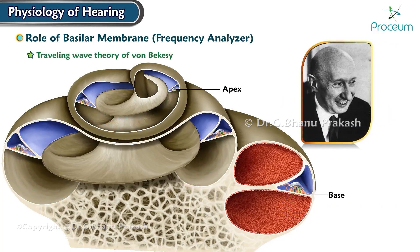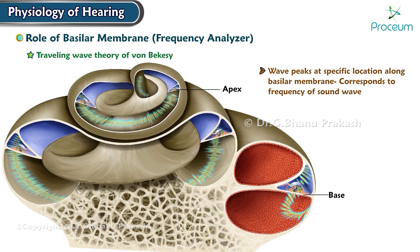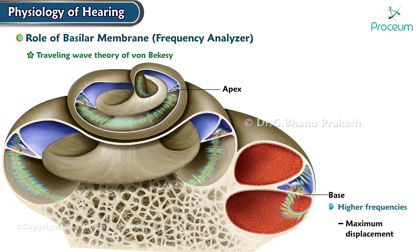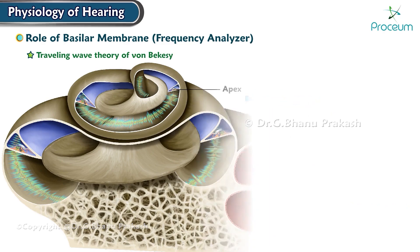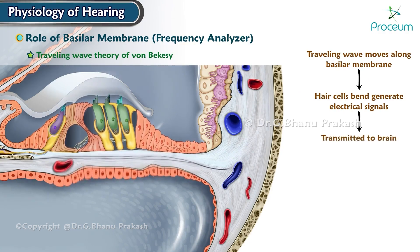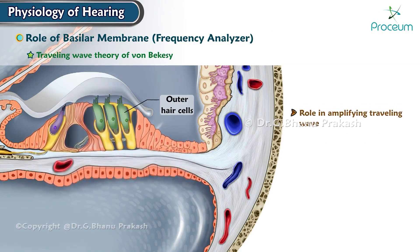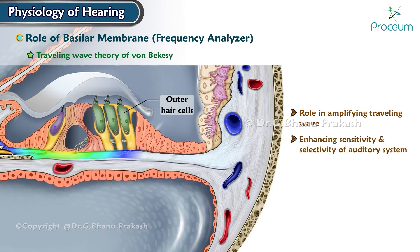According to the Traveling Wave Theory of Von Bekesy, when sound waves enter the cochlea, they create a traveling wave that moves along the basilar membrane from the base near the oval window to the apex. The wave peaks at a specific location corresponding to the frequency of the sound wave, with higher frequencies causing maximum displacement near the base and lower frequencies near the apex. As the traveling wave moves along the basilar membrane, it causes the hair cells to bend and generate electrical signals transmitted to the brain. The outer hair cells of the organ of Corti play a critical role in amplifying the traveling wave and enhancing the sensitivity and selectivity of the auditory system.